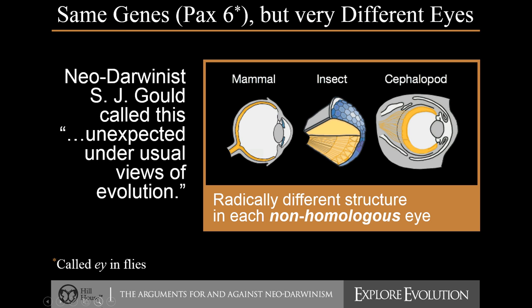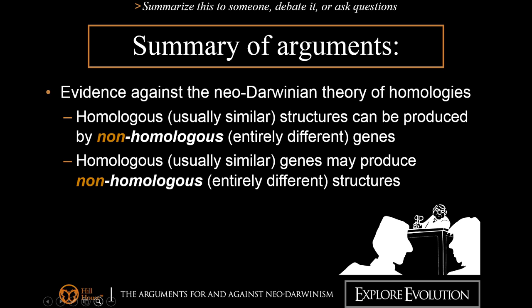One example of that would be the eye produced by Pax6 genes — the eye we find in mammals, insects, and cephalopods. Cephalopods are things like a squid or an octopus. The gene is very similar, but the end result is drastically different. So the big picture here is that if you look at structures and they look similar, it doesn't necessarily tell you about the genetics and the developmental pathways behind them. Those similarities may not be the result of ancestry at all, because sometimes we find similar structures produced by totally different genes, and then we also find things that are very similar genetically but produce two very different structures.